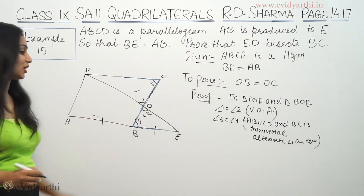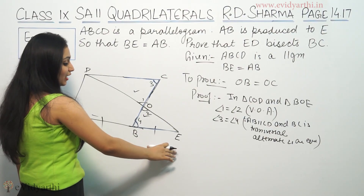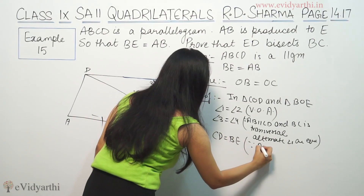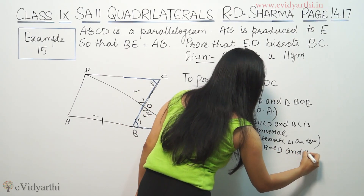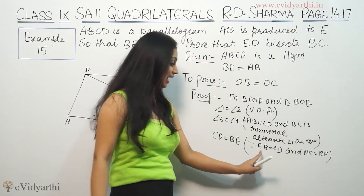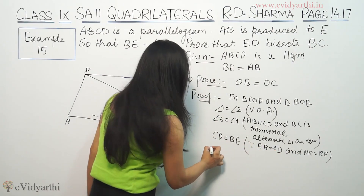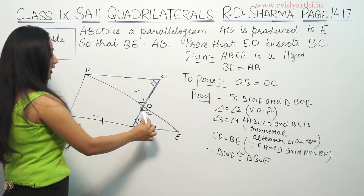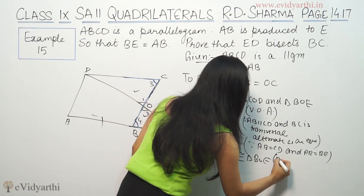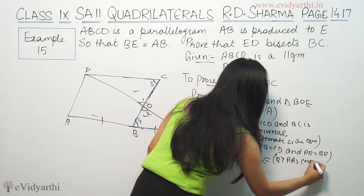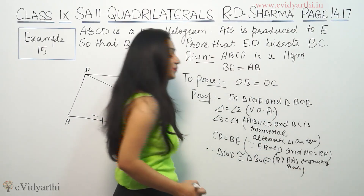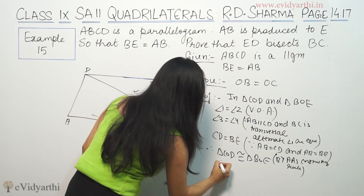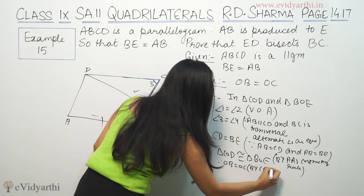And AB is equal to BE — this is given. Therefore triangle COD is congruent to triangle BOE by AAS — angle angle side congruency rule. By CPCT, OB is equal to OC. Therefore OB is equal to OC by CPCT.